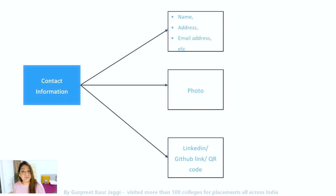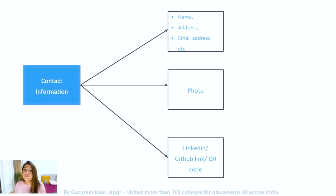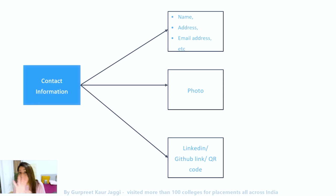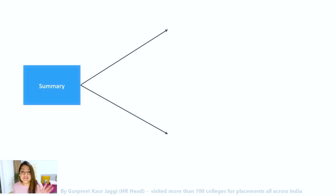Always include a LinkedIn profile and a GitHub profile in your contact information. You can also add a QR code if you like. LinkedIn is very important — having the right LinkedIn profile matters a great deal. If you want to know what a right LinkedIn profile looks like, let me know and I'll create another video on that. All of this contact information should be clearly visible at the top of your CV.